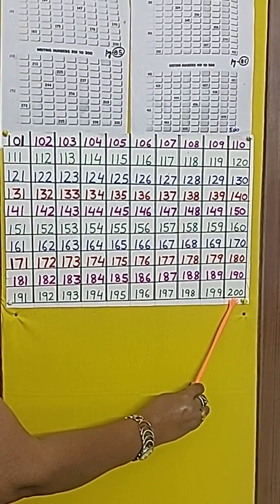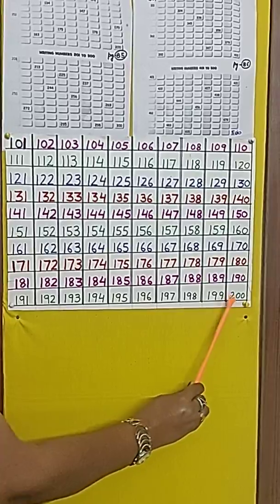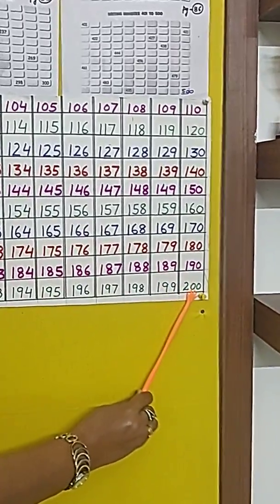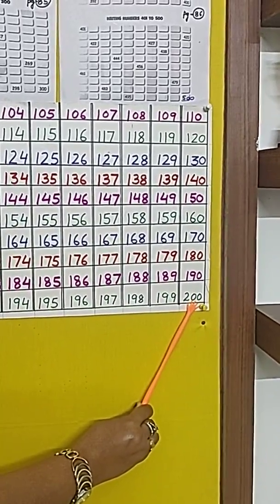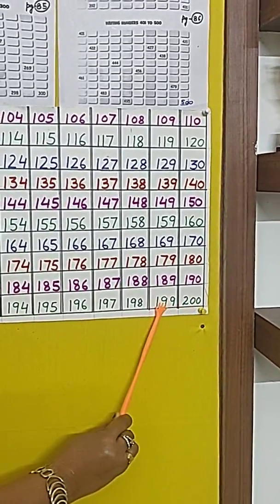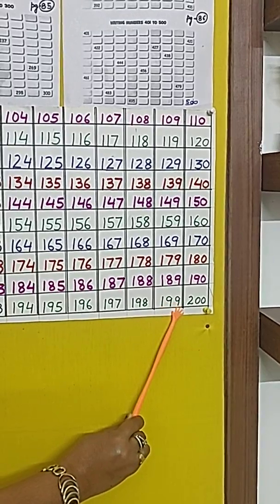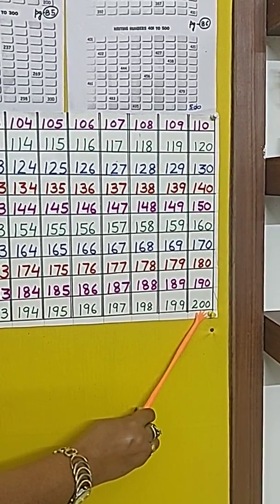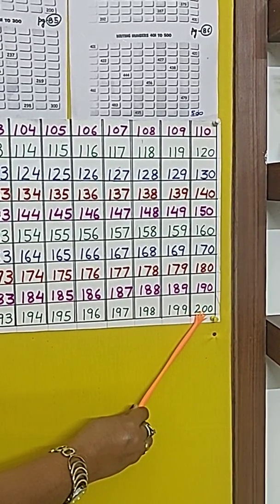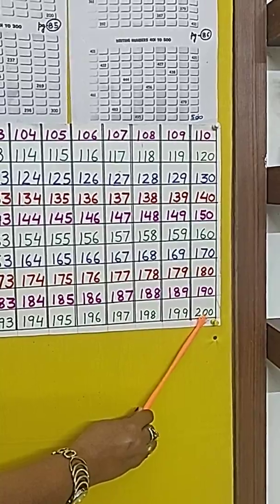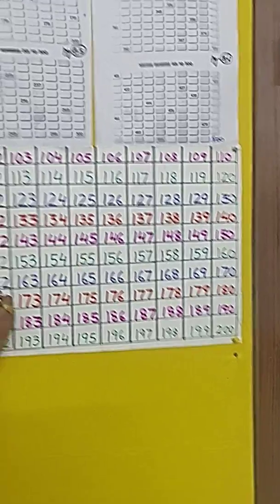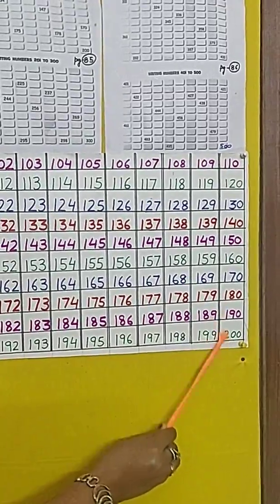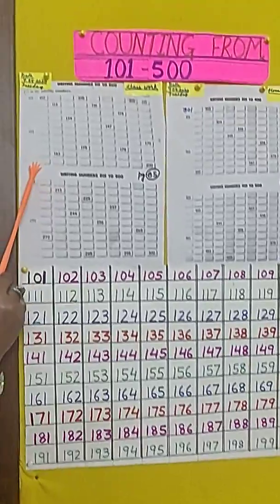The thing to keep in mind is what comes after 199? That is 200, because when we add 1 to 199 it becomes 200. So children, you will be reading the whole writing from 101 to 200 and writing it here.